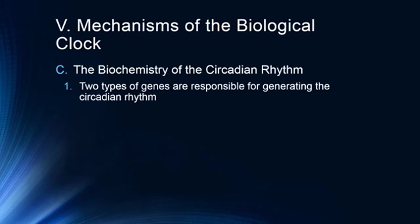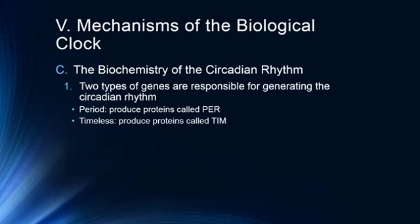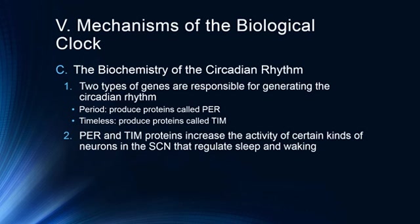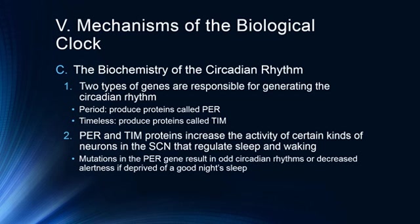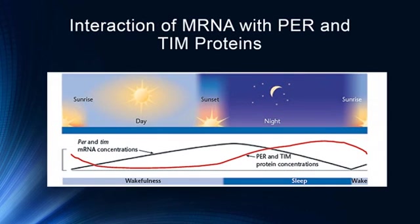There are two types of genes responsible for generating the circadian rhythm. Period genes produce proteins called PER, and timeless genes produce proteins called TIM. PER and TIM proteins increase the activity of certain neurons in the SCN that regulate sleep and waking. Mutations in the PER gene result in odd circadian rhythms or decreased alertness when deprived of a good night's sleep. PER and TIM messenger RNA and protein concentrations themselves follow a 24-hour cycle.